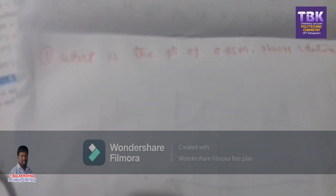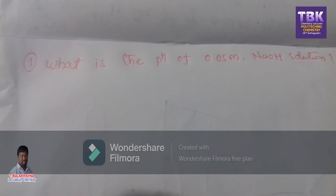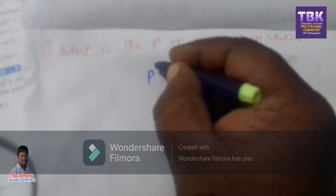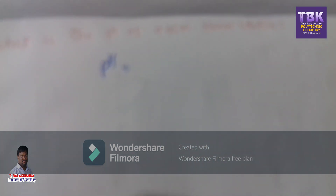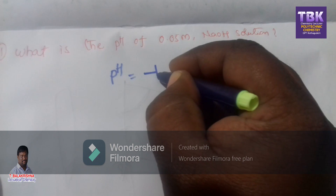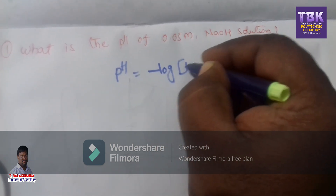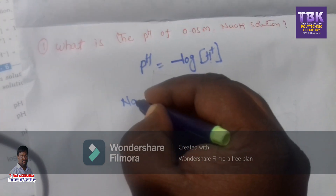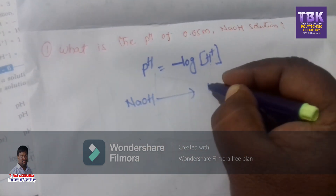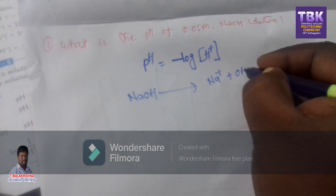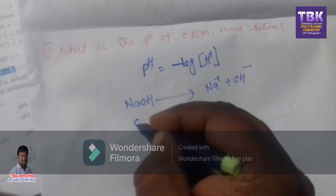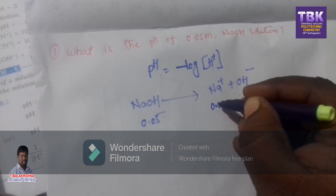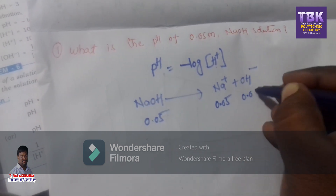Next problem: what is the pH of 0.05 molarity sodium hydroxide solution? The pH formula is pH = minus log of concentration of H⁺ ion. But we have sodium hydroxide, a base. NaOH splits into Na⁺ and OH⁻. The concentration of Na⁺ is 0.05, and the concentration of OH⁻ is also 0.05.